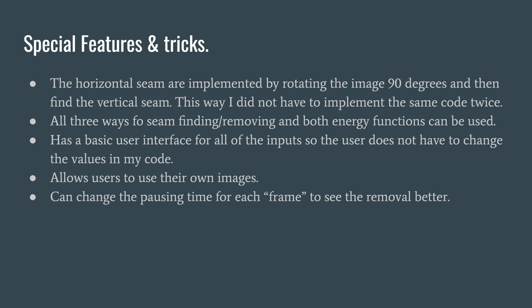Now, the following are some special features or tricks that I have used in this project. First of all, the horizontal seams are implemented by rotating the image 90 degrees and then finding the vertical seam — this way I did not have to implement the same code twice. Second, the user can choose which seam-finding method and which energy function they would like to use. I implemented a basic user interface for all of the inputs, so the user does not have to change values in my code. I also allowed users to use their own images, and they can change the pausing time for each frame to see the seam and its removal.